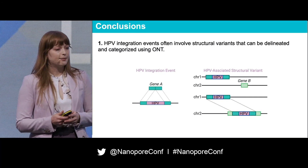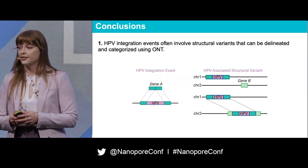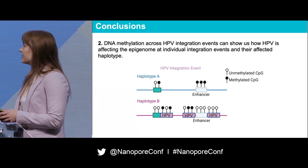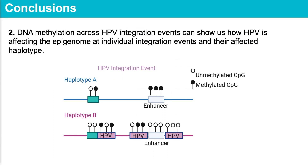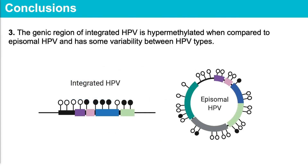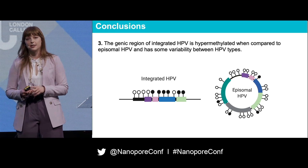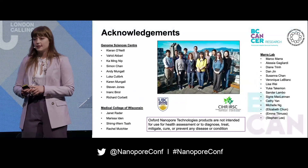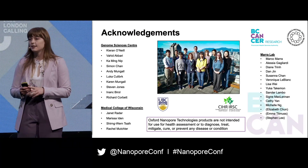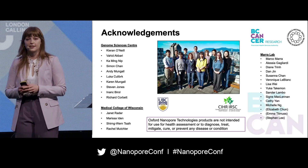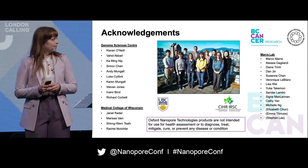In conclusion, HPV integration events often involve structural variants that can be delineated and categorized with Oxford Nanopore technology. DNA methylation across integration events can show us how HPV is affecting the epigenome on the affected haplotype and in individual integration events. Finally, the genic region of integrated HPV is hypermethylated when compared to episomal HPV, with some variability between HPV types. I would like to thank everyone involved in this project at the Genome Sciences Center and the Medical College of Wisconsin, as well as everyone in my lab, especially my supervisor Dr. Marco Marra. Thank you for your attention, and I'm happy to take questions.